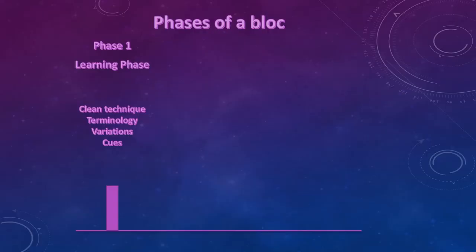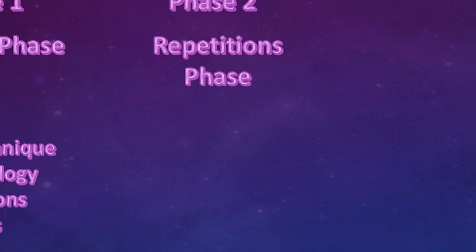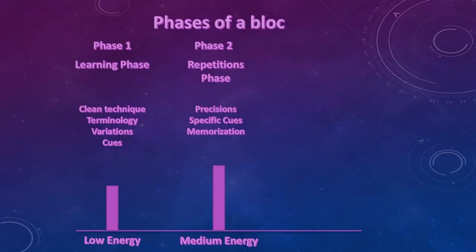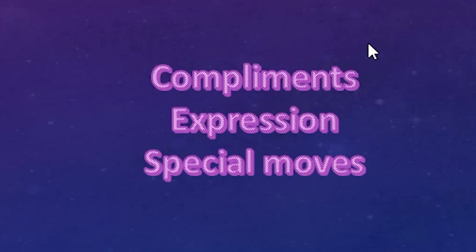The second phase is the repetition phase, where we focus on precision, more specific cues, and memorization. The energy levels are medium, and this is the phase where people need to remember the choreography. The third phase is the style and fun phase, where we give more compliments to our people and energy levels go high.